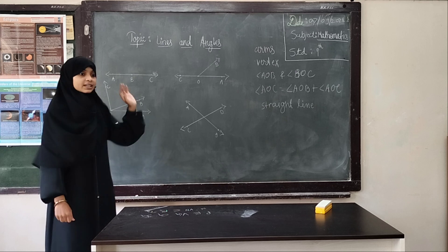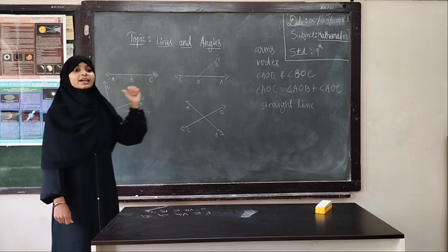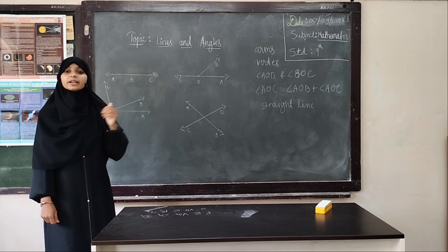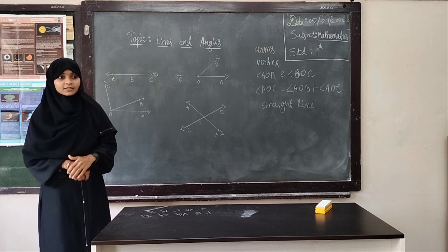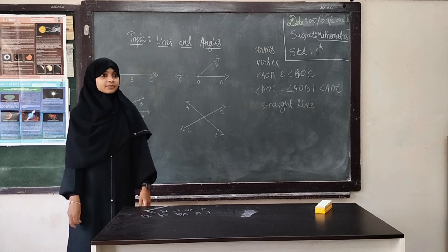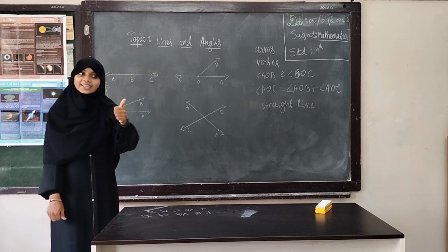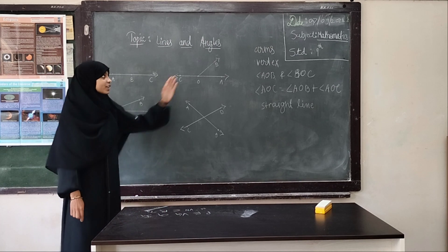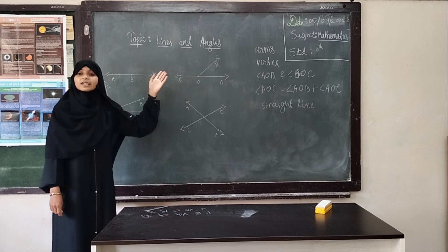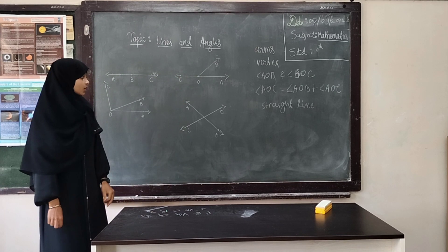Are adjacent angles a linear pair of angles, or are linear pair of angles adjacent angles? Which statement is right? Yes, Aditi. Linear pair of angles are adjacent angles. Very nice. Linear pair of angles are also a pair of adjacent angles.